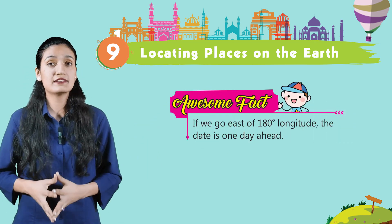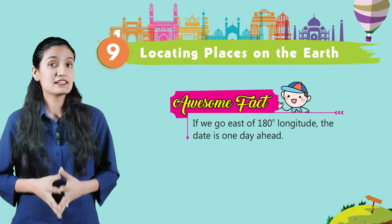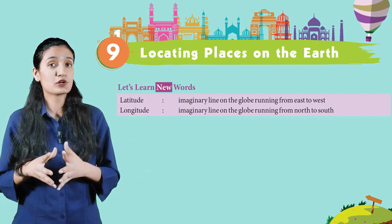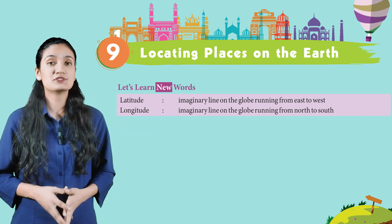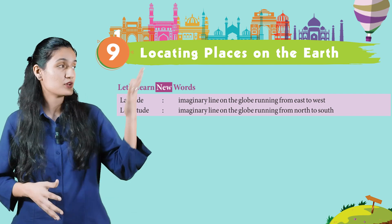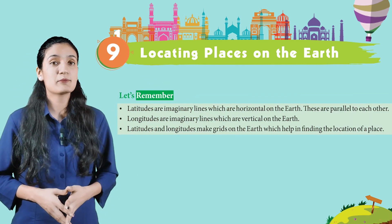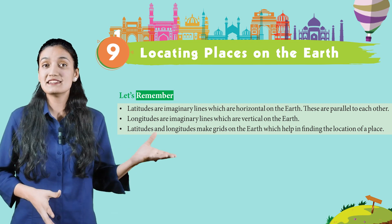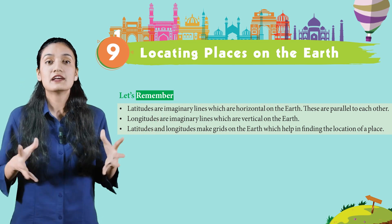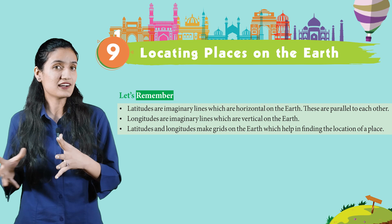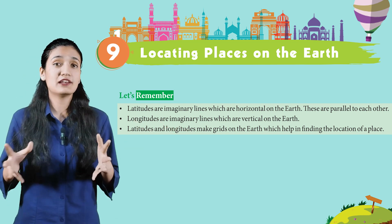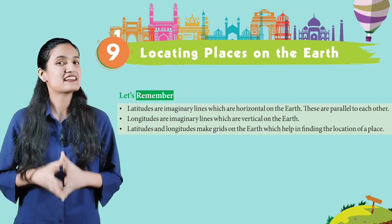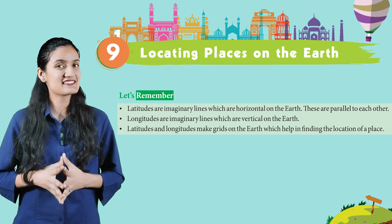Let's learn new words. Latitude: an imaginary line on the globe running from east to west. Longitude: an imaginary line on the globe running from north to south. To remember: latitudes are imaginary horizontal lines on the Earth, parallel to each other. Longitudes are imaginary vertical lines on the Earth. Latitudes and longitudes make a grid on the Earth which helps in finding the location of a place. I hope you all liked this session. We will meet in the next class — till then, bye bye.